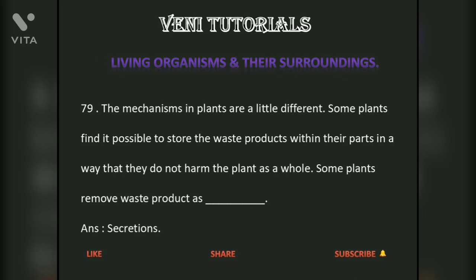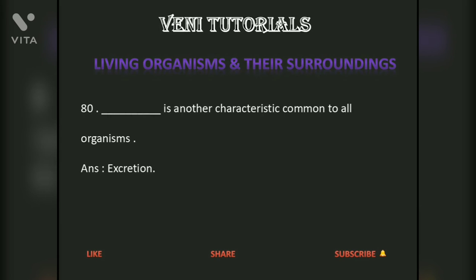The mechanisms in plants are a little different. Some plants store waste products within their parts in a way that they do not harm the plant as a whole. Some plants remove waste products as dash. Answer: Secretions. Dash is another characteristic common to all organisms. Answer: Excretion.